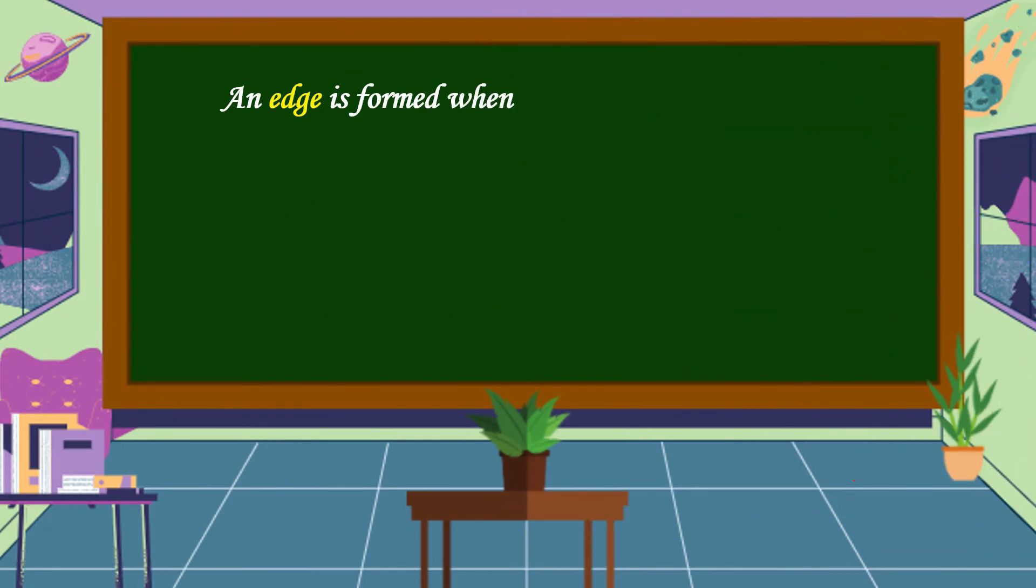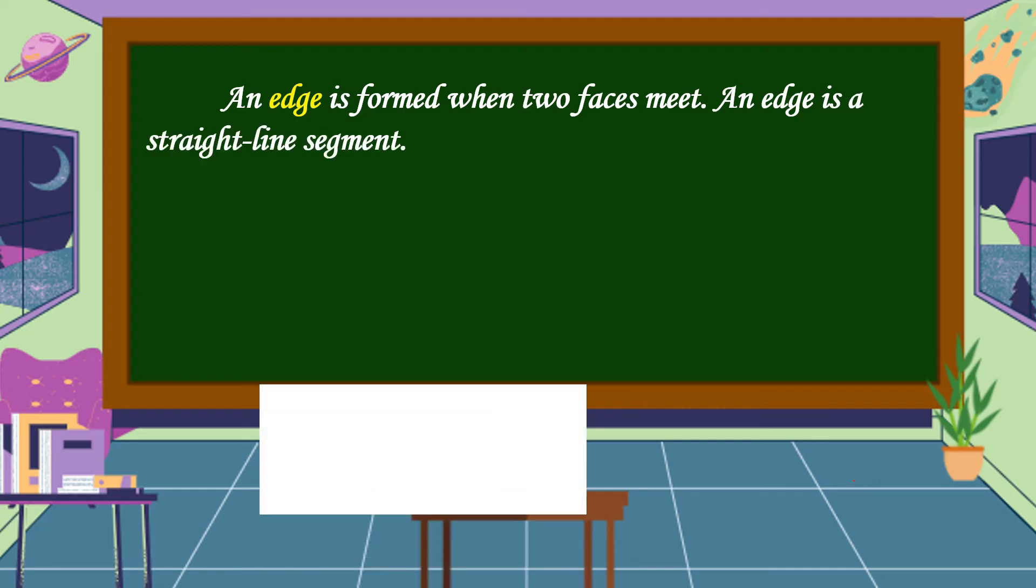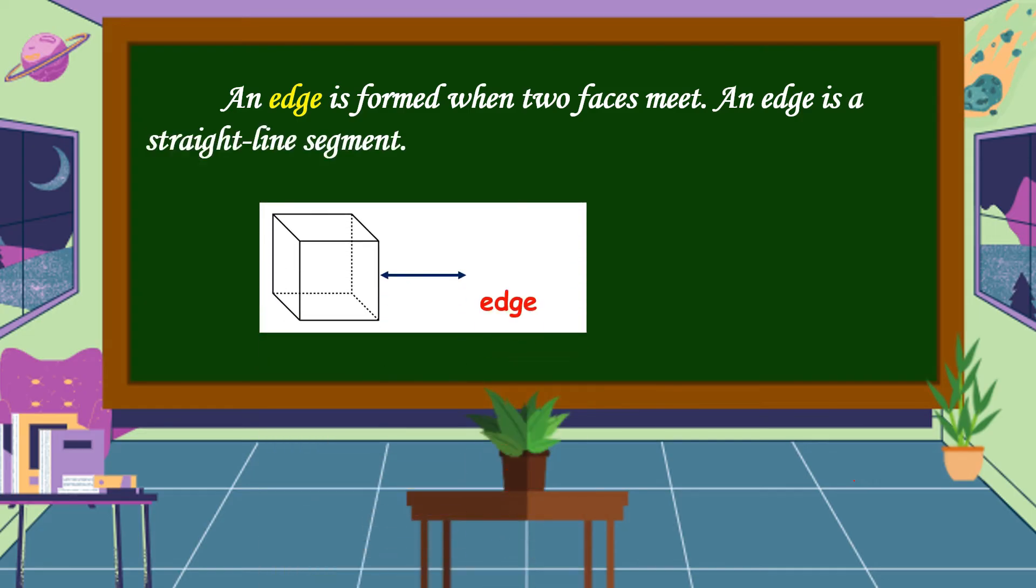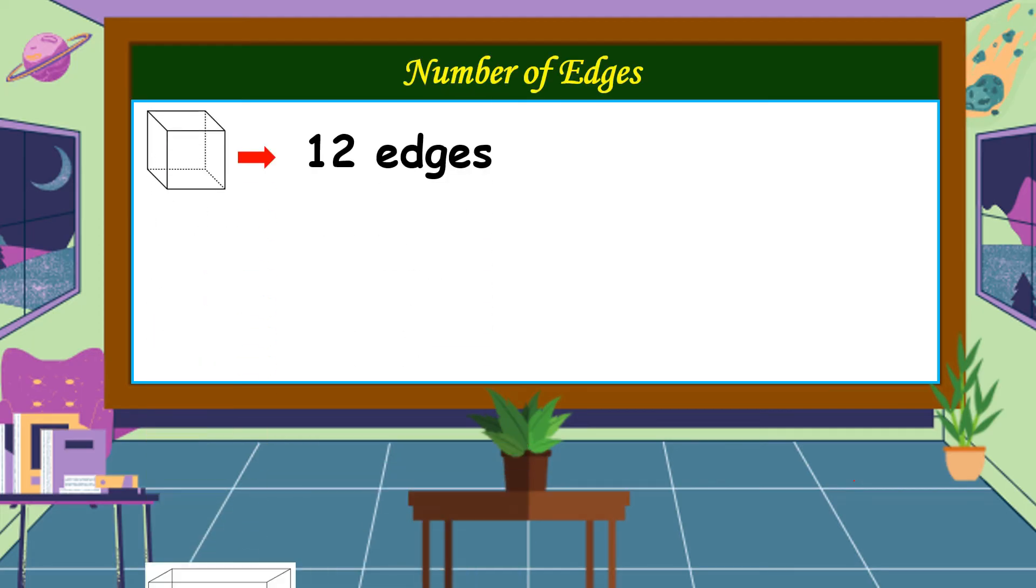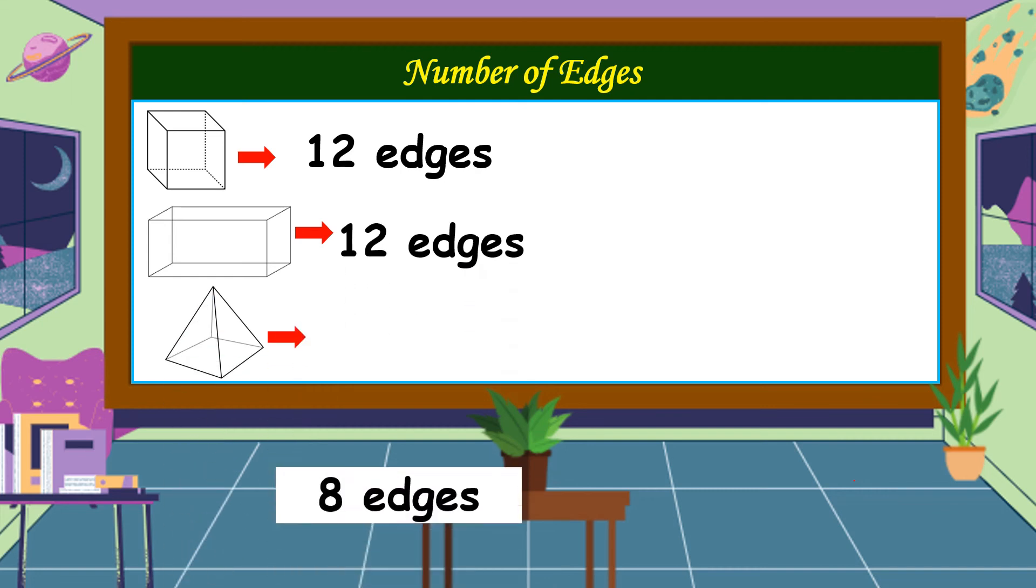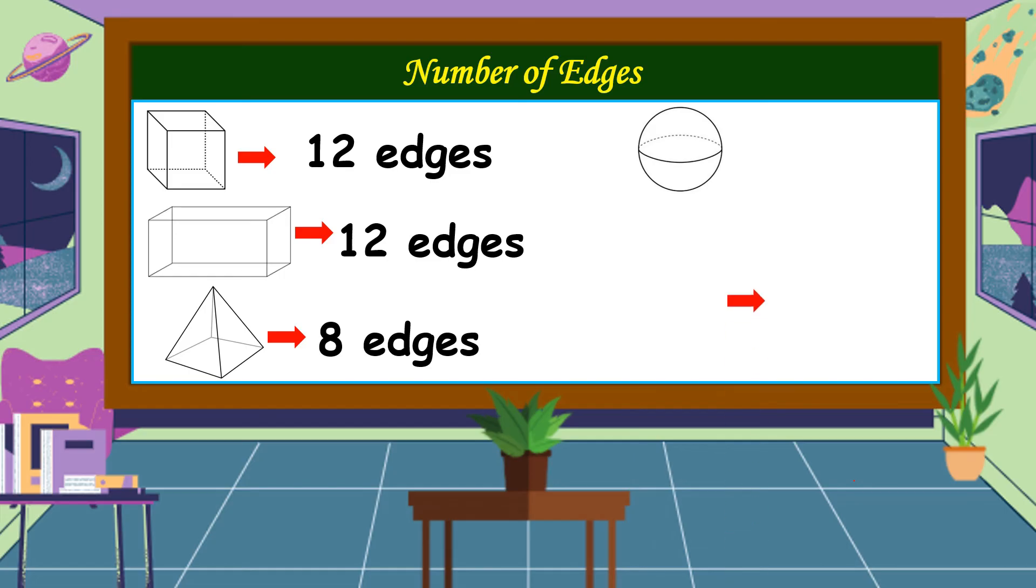An edge is formed when two faces meet. An edge is a straight line segment. This is the edge. Let's count the edges of each solid figure. A cube has 12 edges, a rectangular prism has 12 edges too, a pyramid has eight edges. A sphere is zero, a cylinder is zero, and a cone is zero.